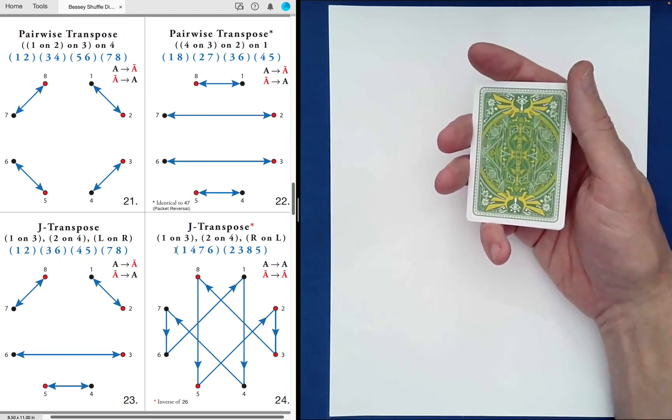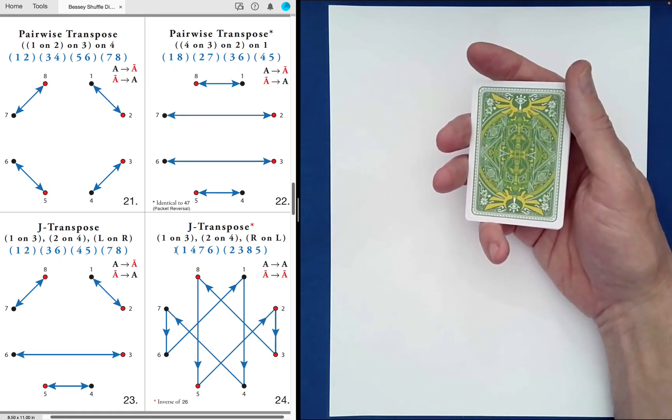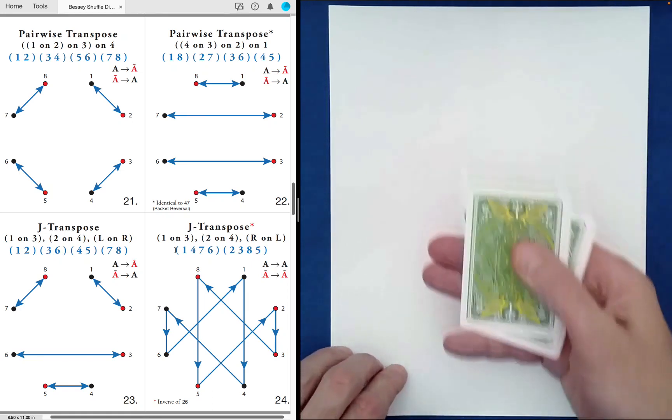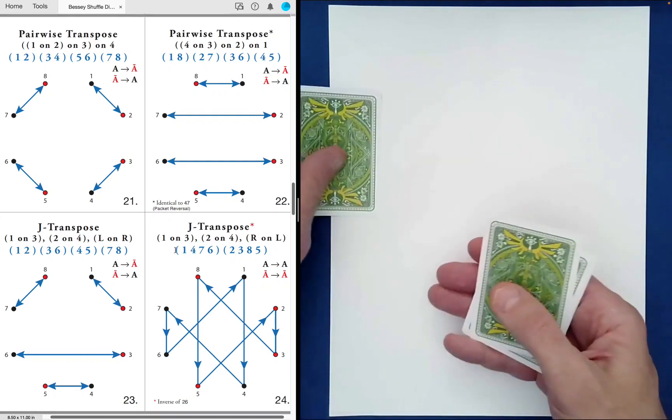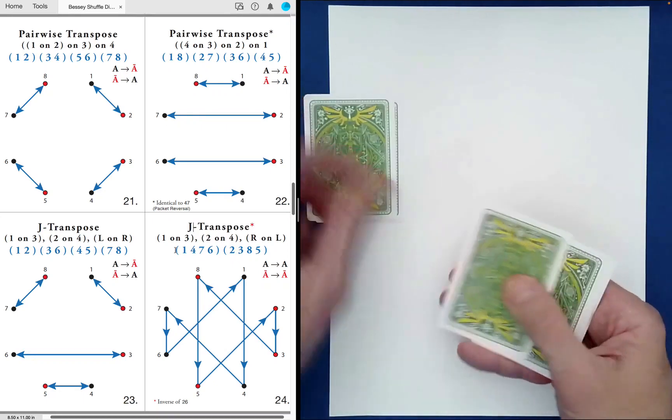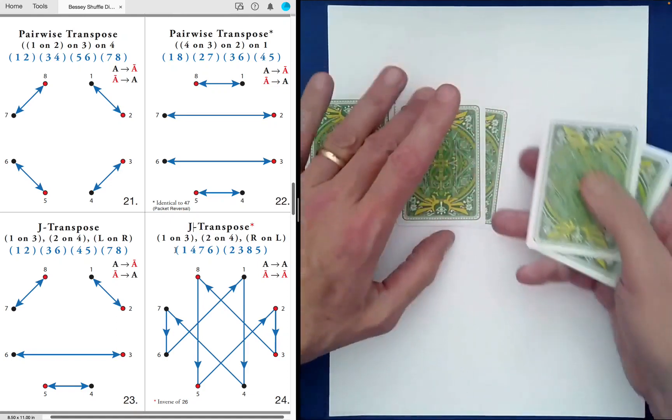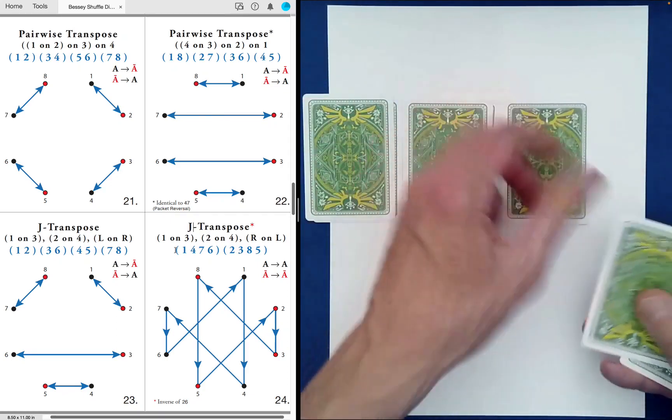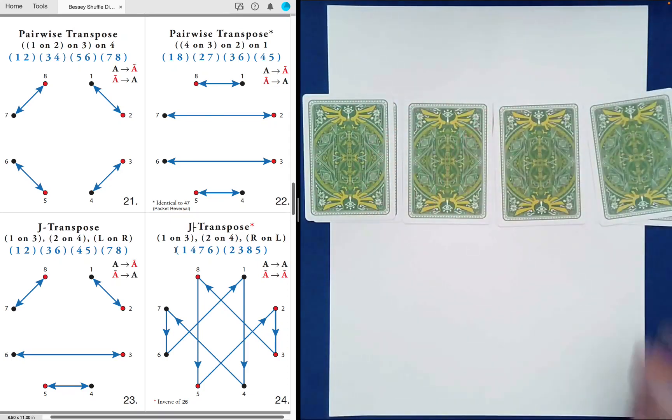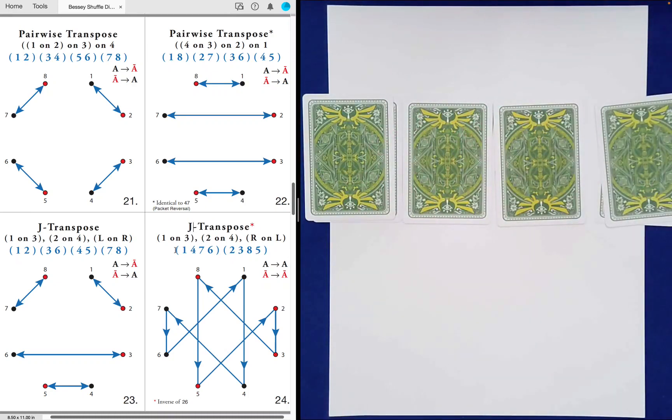So why don't we begin with shuffle 23, let's say. Okay, so that's a judicious transpose. Now all of these shuffles begin with the same dealing out, right? Hopefully I've made that clear. The only difference is the stacking.